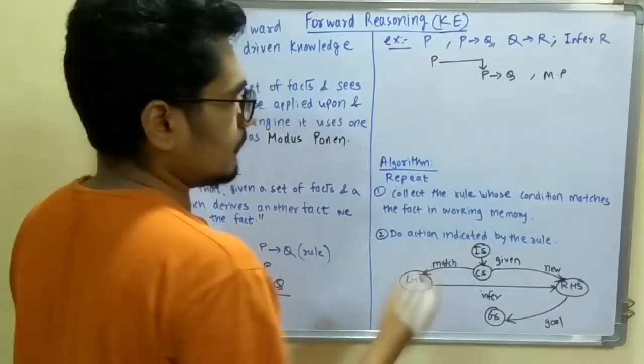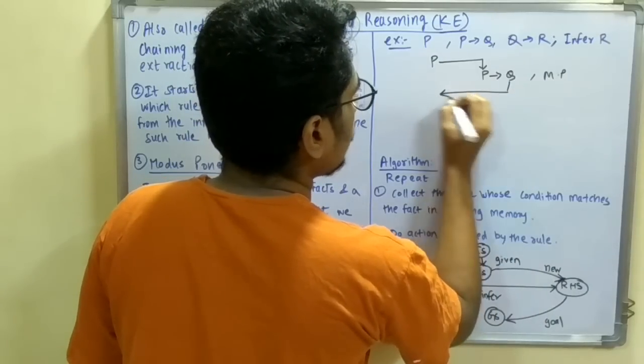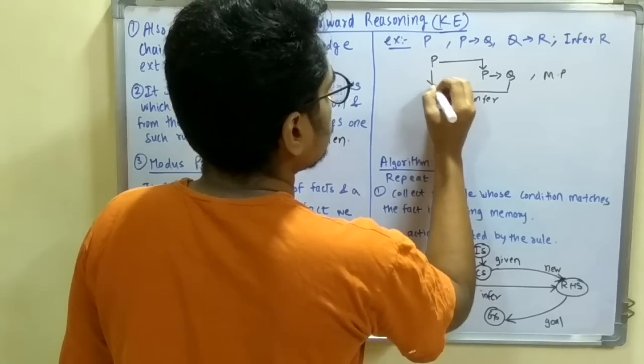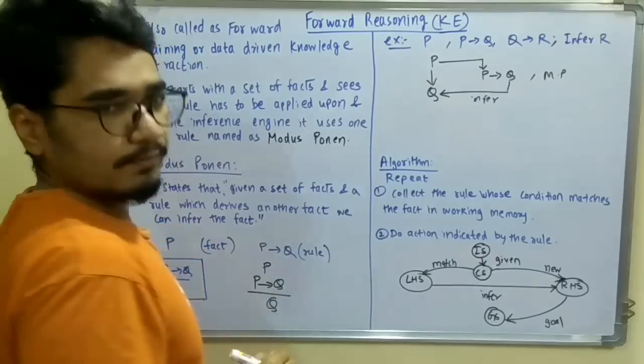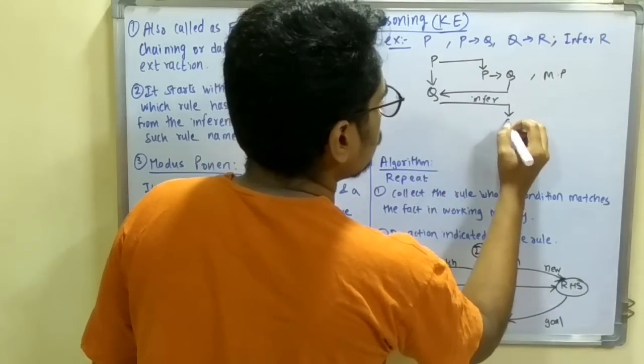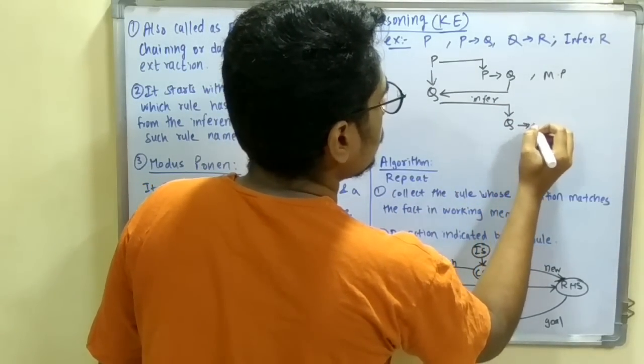I will write MP here, and once you have this, you can infer Q. You can join because P derived Q, and from here you can use the rule Q derives R.